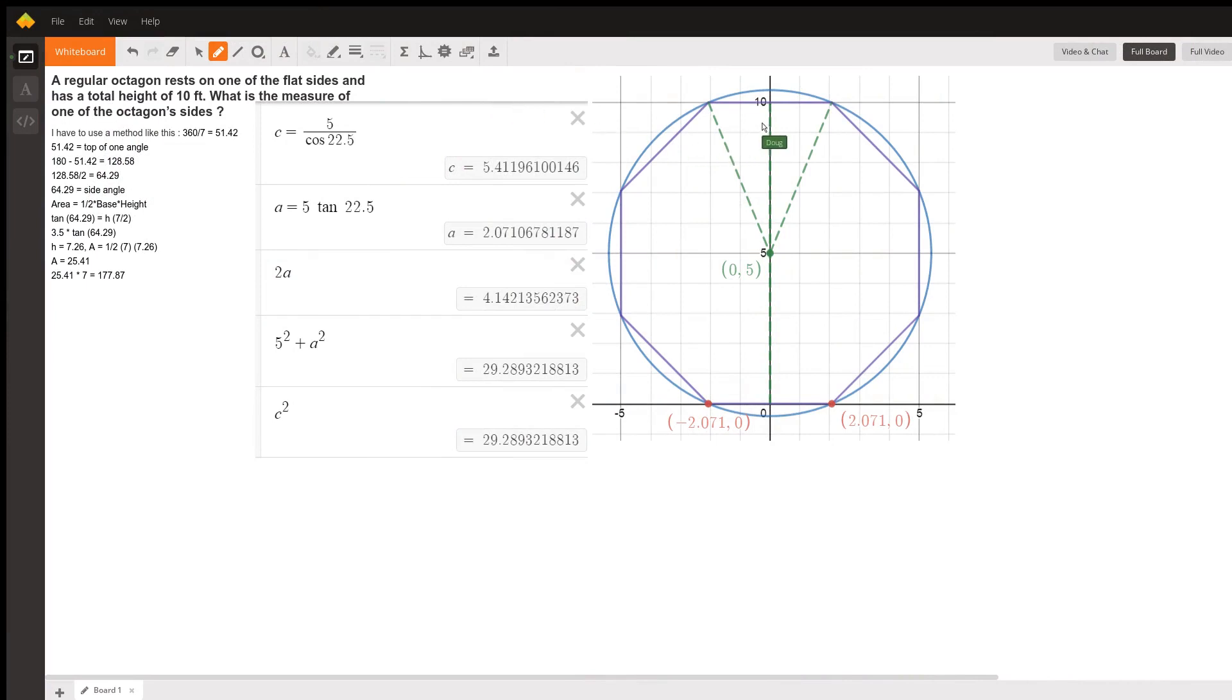Here's a picture of the octagon resting on its side with a height of 10. The distance from the point on which the octagon is resting up to here is 10. I'm going from 0 to 10, so this point is halfway between 0 and 10—the center of the octagon.